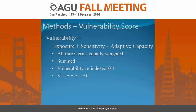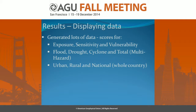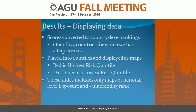Now we're ready to sum up and get to vulnerability. Here's our model again. This generated a large amount of data — every country, urban, rural, and national, with exposure, sensitivity, and vulnerability for flood, drought, cyclone, and the total multi-hazard terms. I'm going to focus on the national-level exposure and vulnerability. Out of 173 countries for which we had adequate data, we ranked those and placed them in quintiles on these maps — red is bad, green is good.